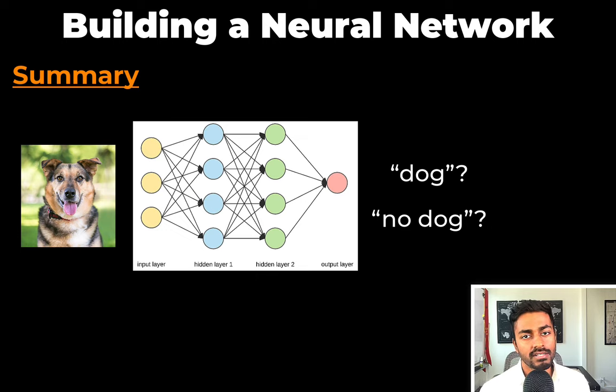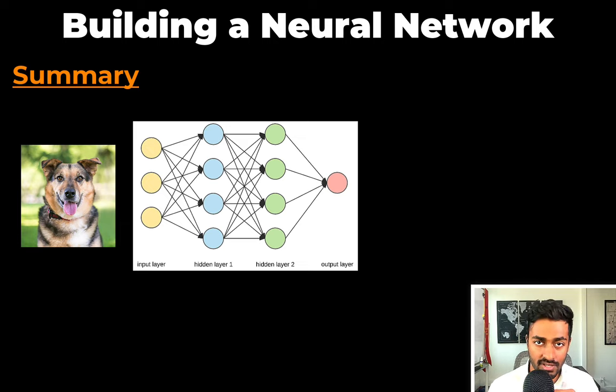But before we go, let's start with the summary. Putting it all together for the training process, we want to train the neural network to recognize dogs from not dogs. We pass in a single image to the network. The network generates a number that indicates the probability of a dog.